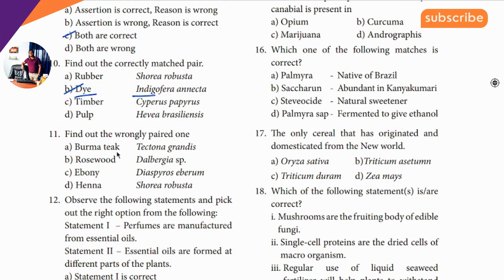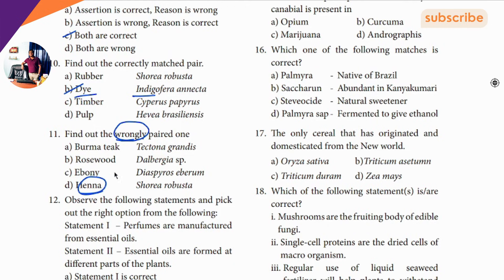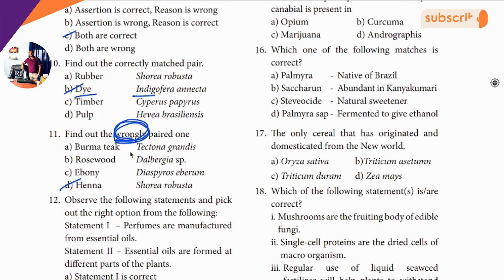Eleventh question: wrongly matched. Wrongly is a clue — you know wheat function is an antioxidant. Wrong design is an antioxidant.